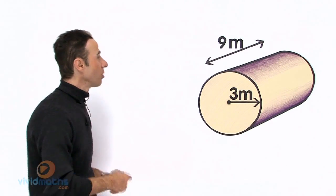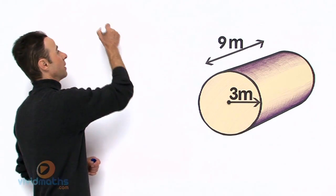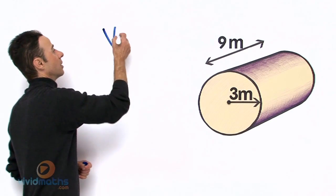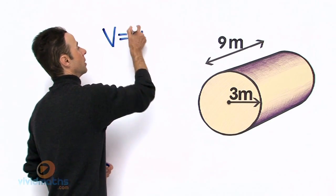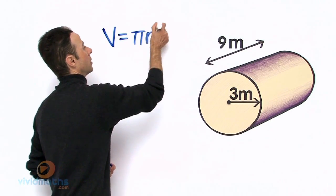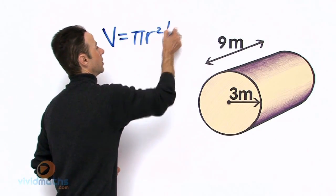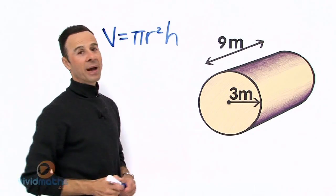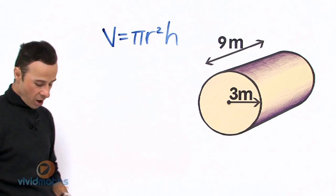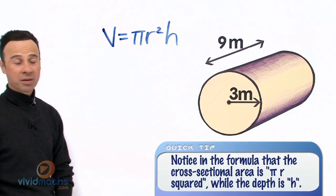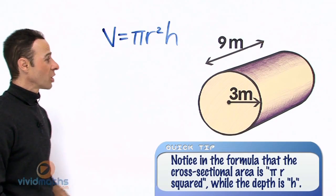So let us write down that formula. The volume of a cylinder is pi r squared times height, or length.